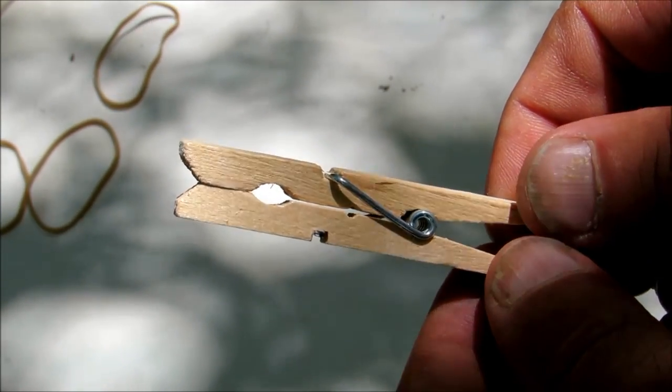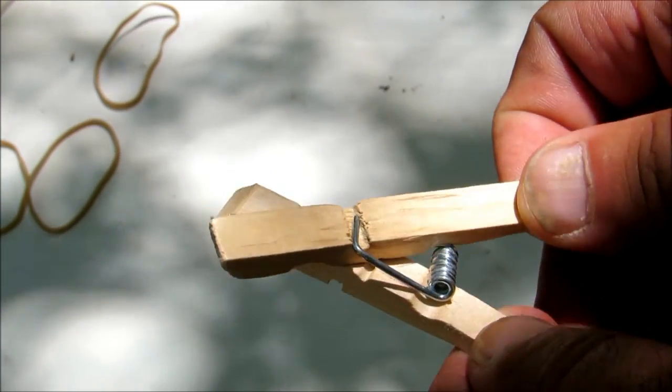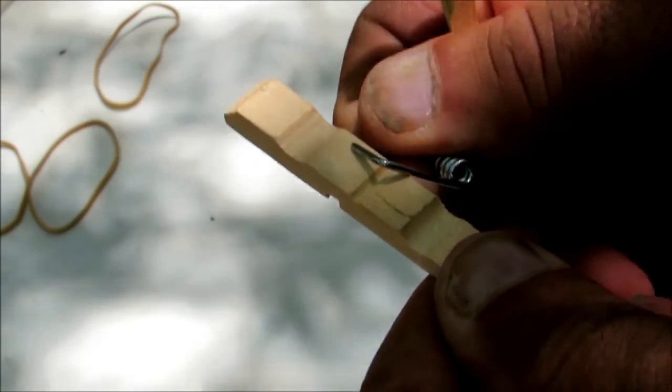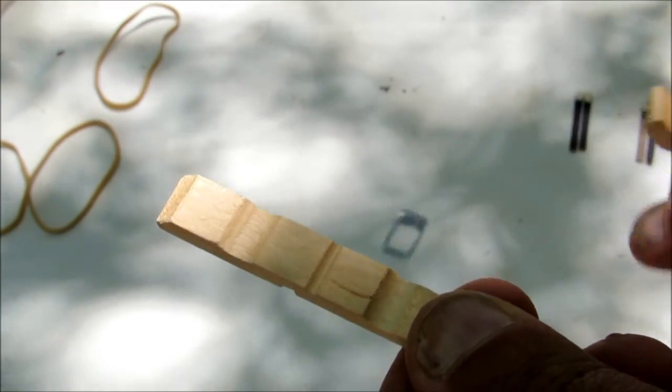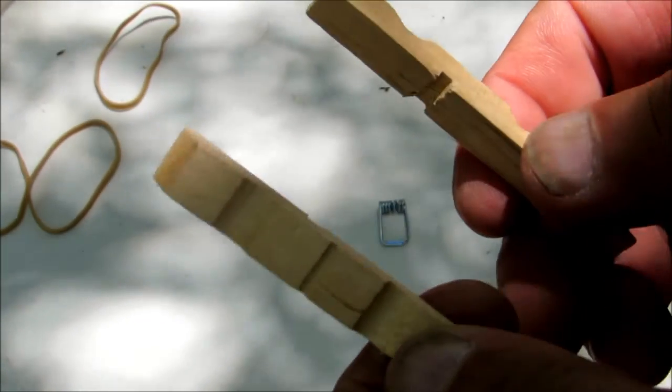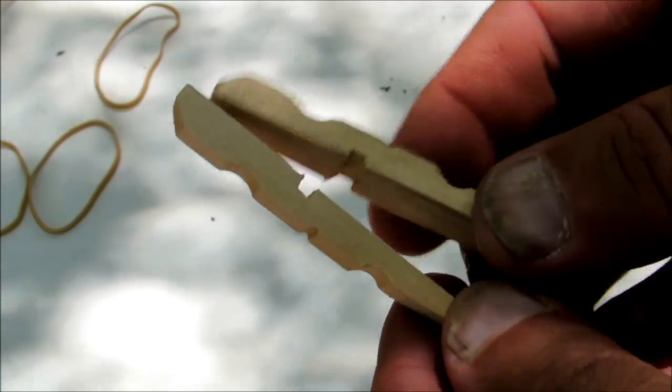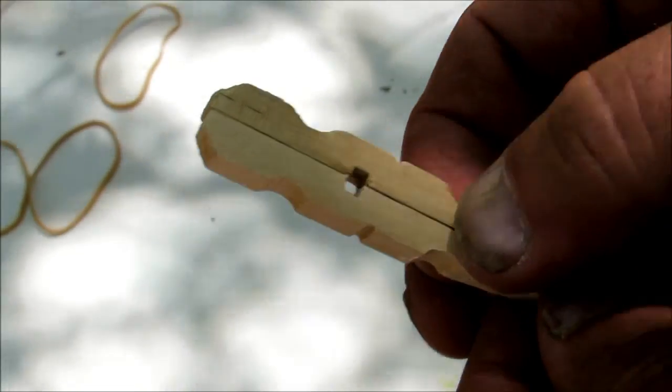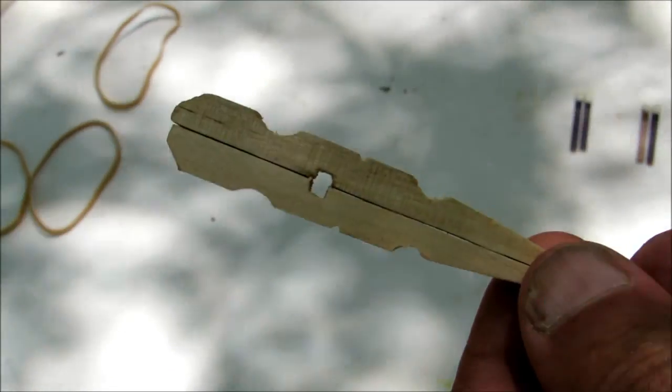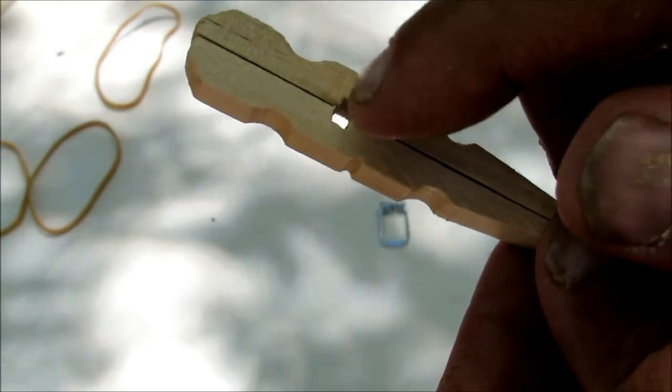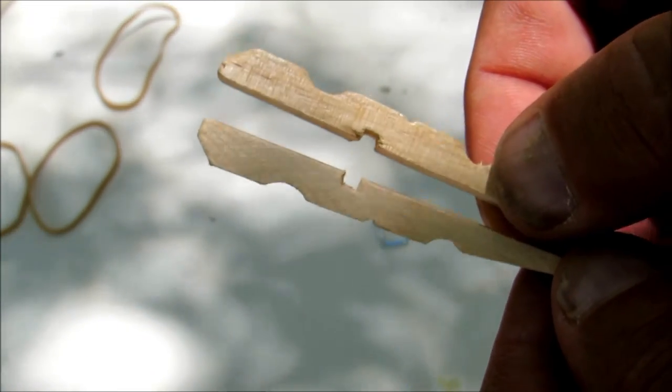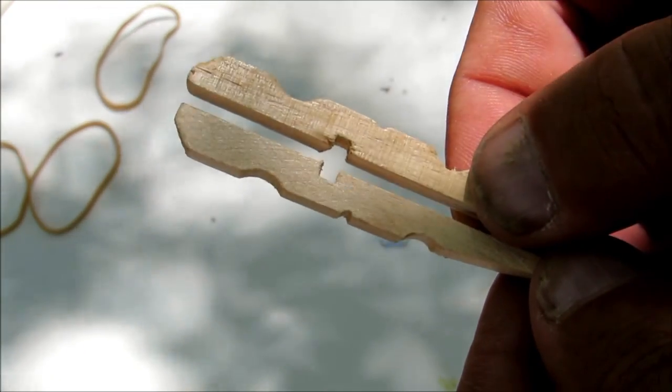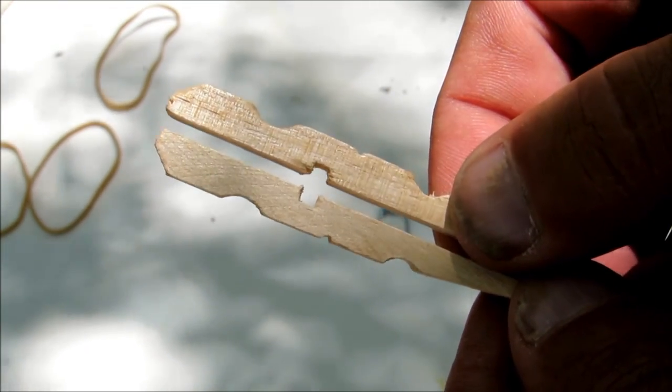First thing you're gonna do is take this clothespin apart. Pull that spring out of there. Then you're gonna have these two ends with flat sides, and you're gonna put them together. When you're done it's gonna look like that. The slot all along here is where you're gonna get the vibration. It'll have a little gap in it like that.